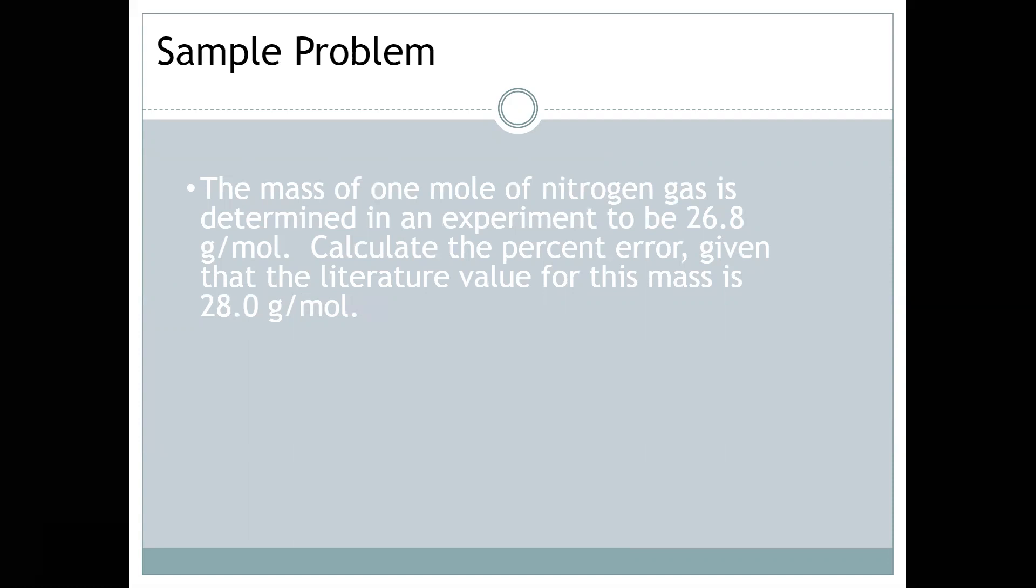Let's do a sample problem. This says the mass of one mole of nitrogen gas is determined in an experiment to be 26.8 grams per mole. Calculate the percent error, given that the literature value for this mass is 28.0 grams per mole. So what you're going to do here is write down the formula. Your experimental value minus your actual value. So that's your absolute value of that entire thing divided by your actual value times 100.